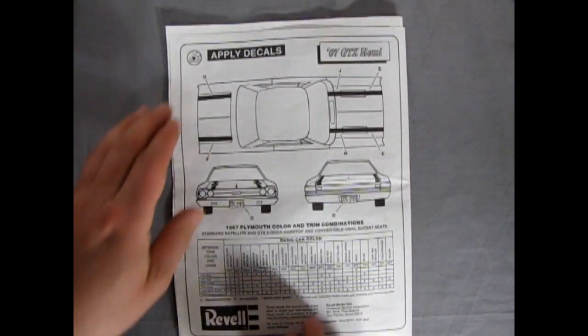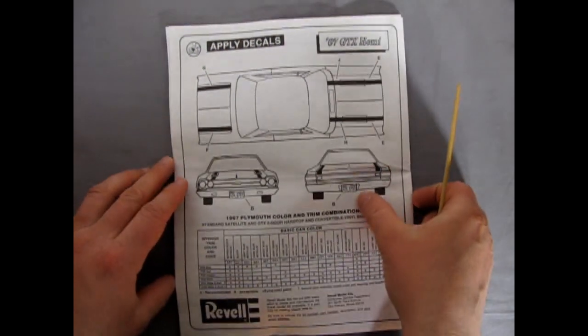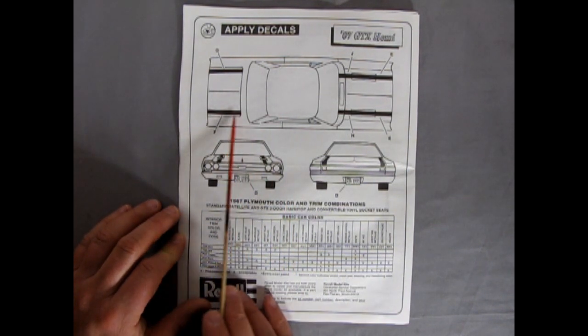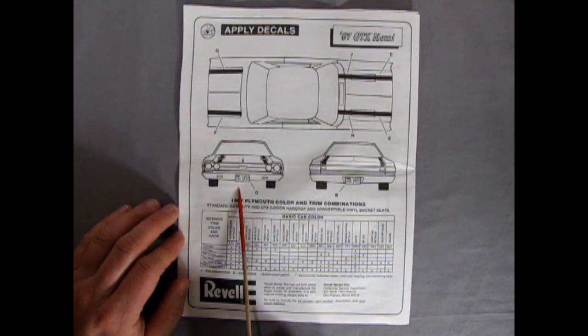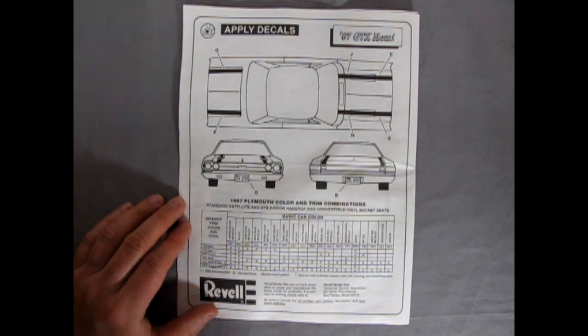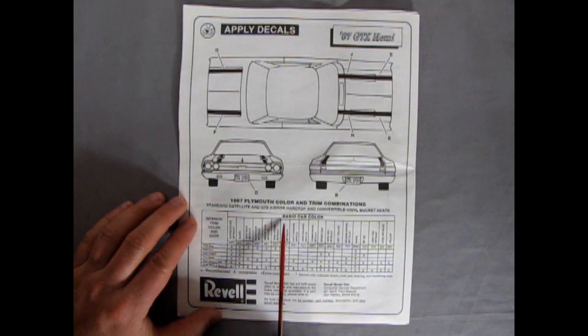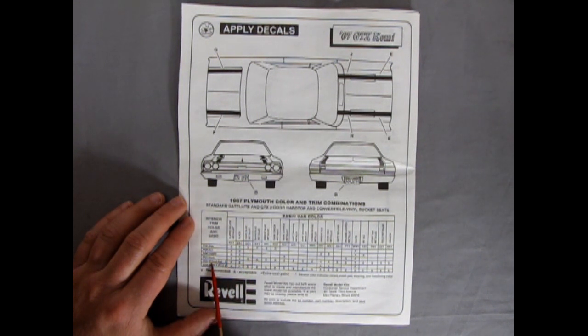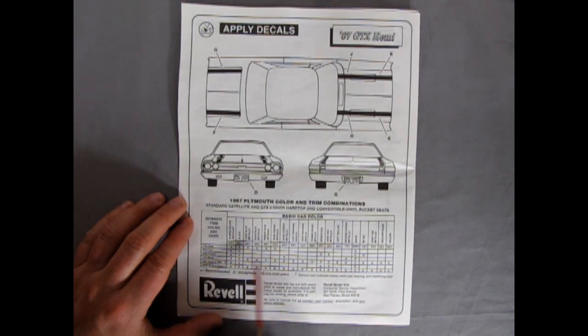And then what's on the back here? Full size Plymouth GTX decal location chart. So you've got your stripes going on there and then your 426 GTX license plate. Again, specific license plate, not a generic, which I'd prefer the generic because then you can put it in any town, any city. And then here it's got 67 Plymouth color and trim combinations: standard satellite and GTX two-door hardtop and convertible vinyl bucket seats. So here it tells you all the stuff. It actually has a paint code on here: PGB blue, PGR red, PGK copper, and all the rest. So if you want to find these, try looking in your paint store for Chrysler colors.